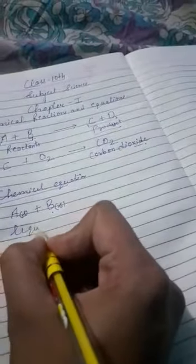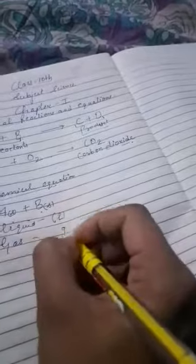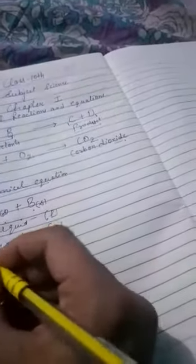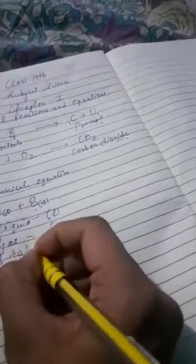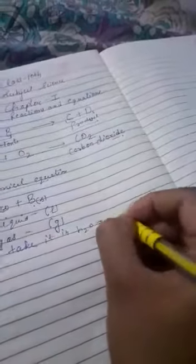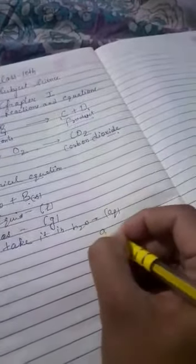If we take liquid then it is written as L. If we take gas then it is written as G. If we take it in water then it is written as AQ, means aqueous.